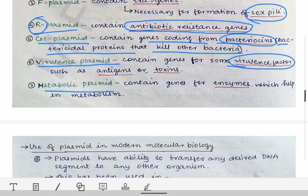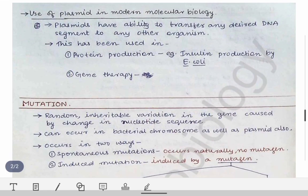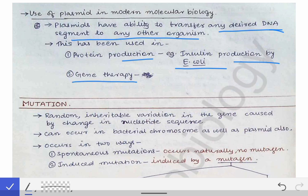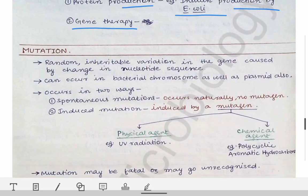Plasmids have the ability to transfer any desired DNA segment to any other organism. This feature has been utilized in biotechnological methods, such as insulin production by E. coli. Plasmids are also used extensively in gene therapy. This covers all about plasmids — if a short note is required, you should be able to write in detail about this in your exams.